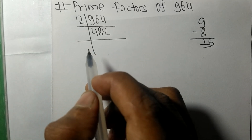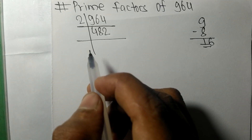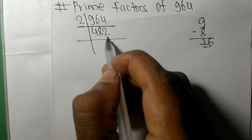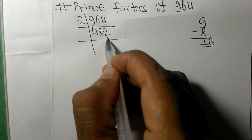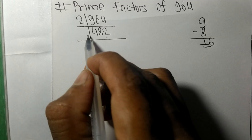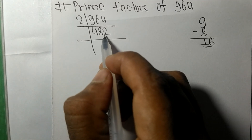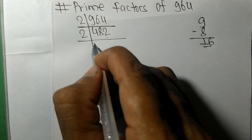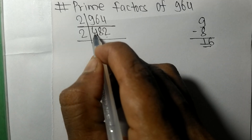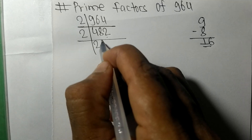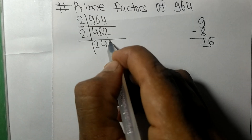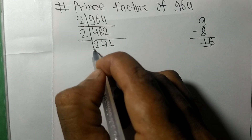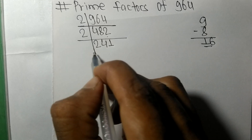So now we got 482, which contains the even number 2 at the end, so it is exactly divisible by 2. 2 times 2 is 4, 2 times 4 is 8, 2 times 1 is 2.